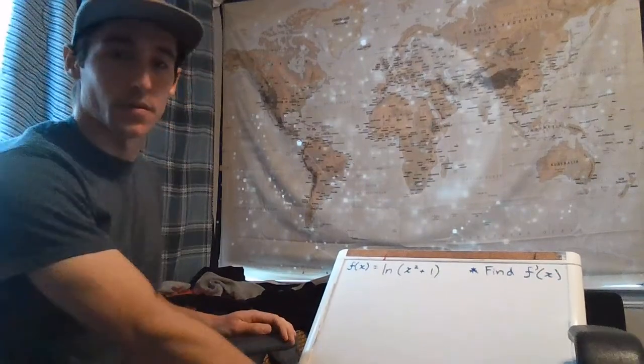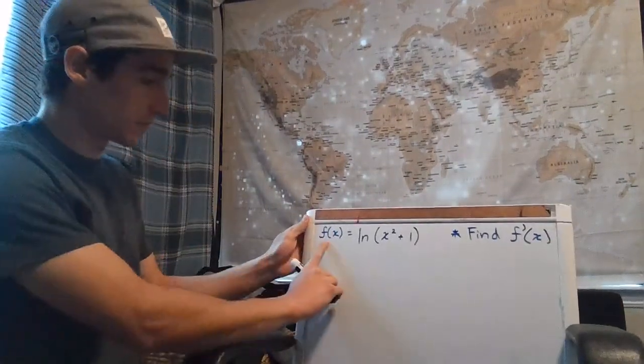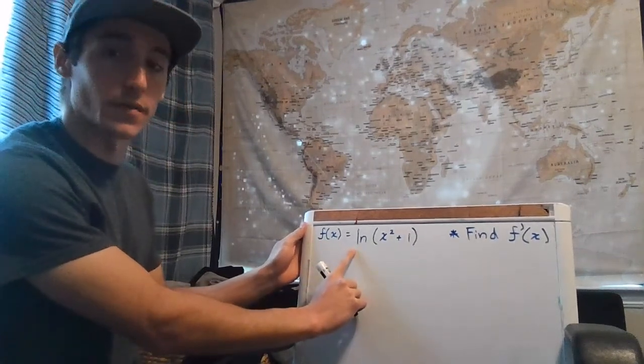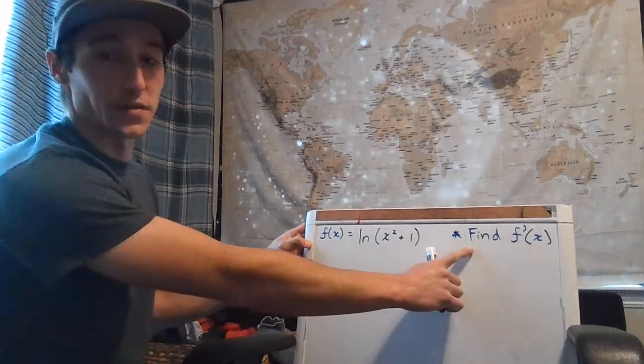Okay, in this example, we're given a pretty straightforward natural log function. Here our function given is f of x equals the natural log of x squared plus 1, and we're being asked here to find the derivative.